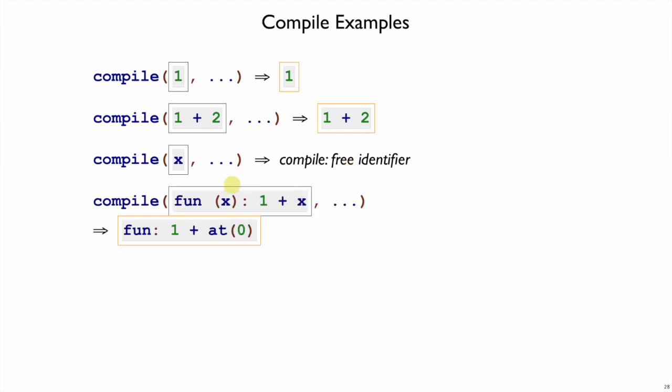On the other hand, if we have an x inside of a function where x is the argument, then we know that when we get to that x it's going to be at position 0. It's going to be the first thing in the environment. So we will compile this function expression to a function expd form of the expression where we use at 0 in place of x and we just drop the name of the argument in the function form.